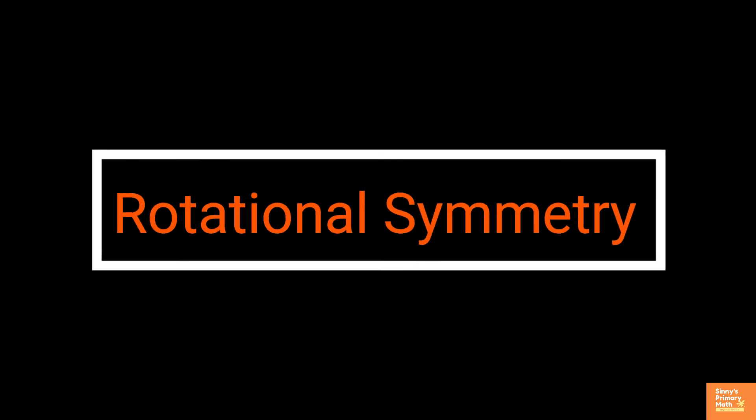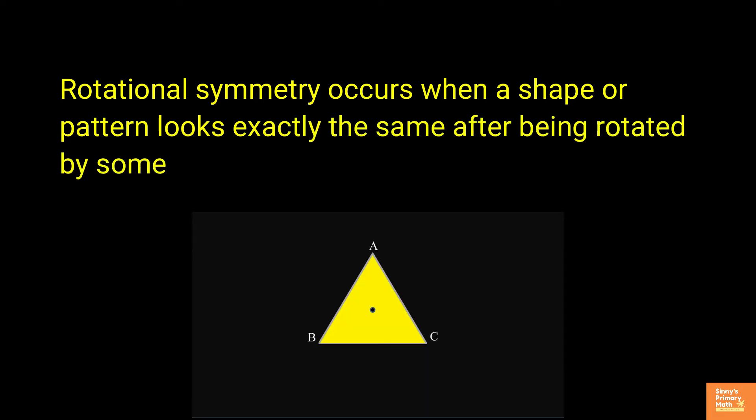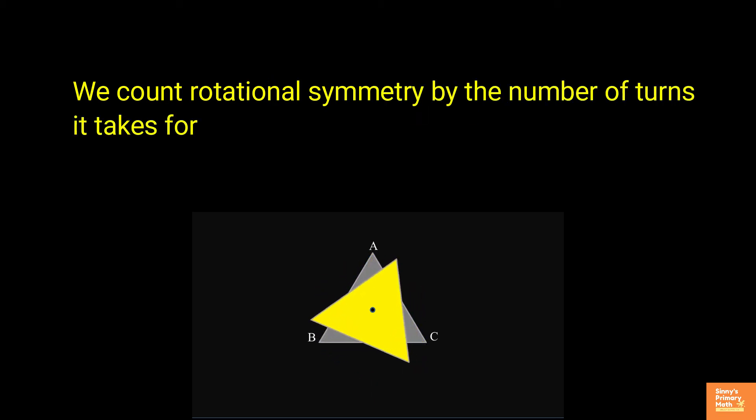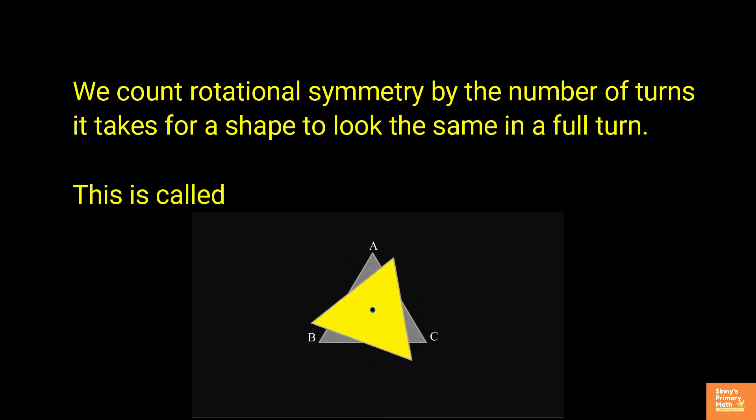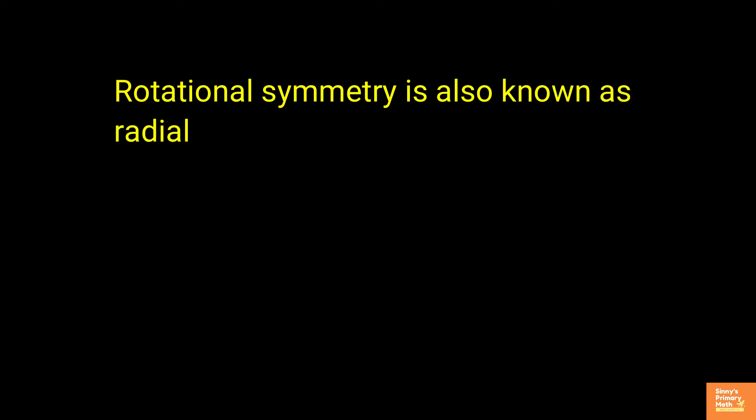Rotational symmetry. Rotational symmetry occurs when a shape or pattern looks exactly the same after being rotated by some degree about a point. Every rotation or pattern has a center and an angle. We count rotational symmetry by the number of turns it takes for a shape to look the same in a full turn. This is called the order of rotational symmetry. Rotational symmetry is also known as radial symmetry.